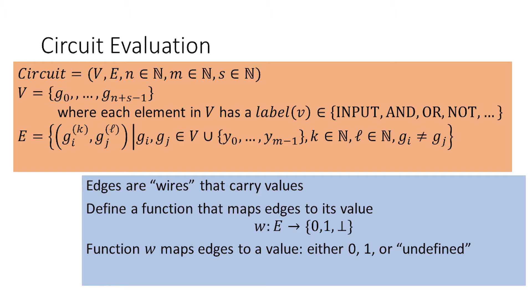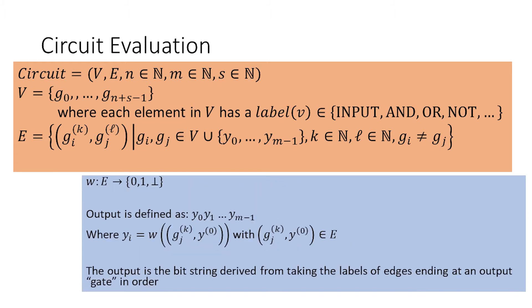That symbol is oftentimes called bot or bottom. The idea is that when a gate outputs a value, the wire connected to that gate has its value changed from unknown to whatever the gate's output ended up being. In order to actually compute the function, we also need to define how we get output from the circuit — what the output is and how to obtain it. Recall that we want our circuit to map binary input strings to binary output strings.